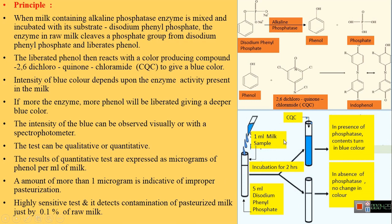In actual practice, 5 ml of di-sodium phenyl phosphate, that is the substrate of the enzyme, is taken in a test tube. To that, 1 ml of the milk sample which is to be tested is added. This mixture is then kept for incubation at 37 degrees centigrade for a period of 2 hours, either in the incubator or in the water bath.